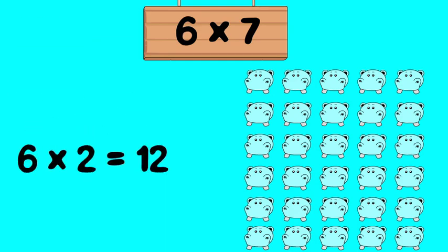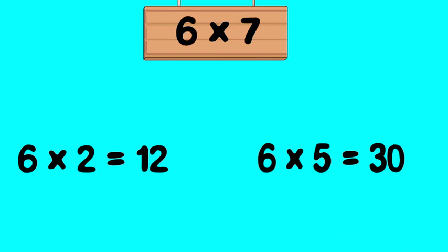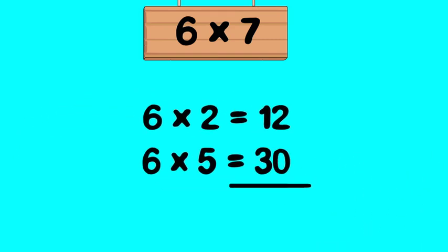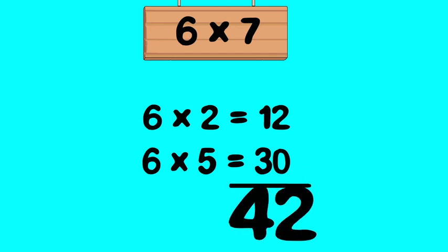6 times 2 is 12. 6 times 5 is 30. So, 6 times 7 is 12 plus 30. That's 42.